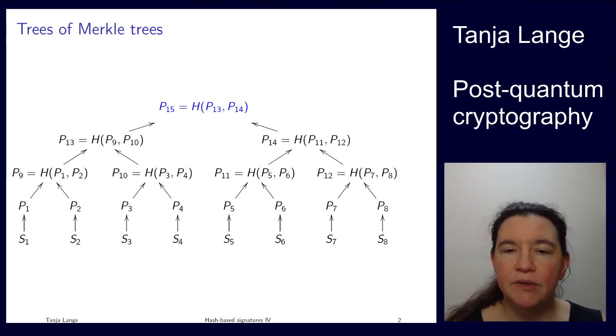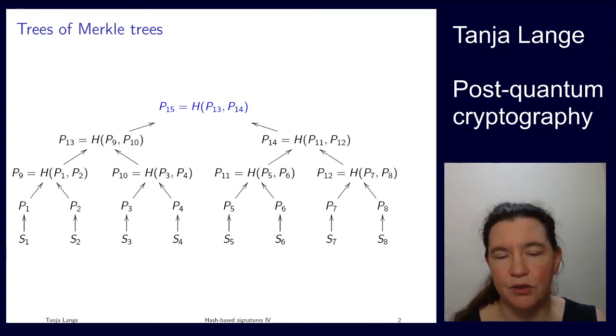And so the main ingredients for stateful hash-based signatures are these Merkle trees and in XMSS or in LMS there are trees of those Merkle trees. And I briefly explained how you do this, but I didn't have the drawings so let's briefly run through the drawings.